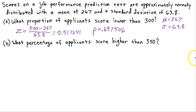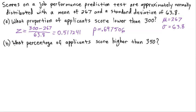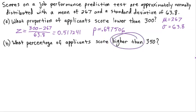Part B asks: what percentage of applicants score higher than 350? Since it's asking for a percentage, after we get our proportion we'll multiply by 100. First we need a Z-score for 350. Z equals 350 minus 267 divided by 63.8. We go back to the NumWorks calculator and use parentheses: (350 minus 267) then divided by 63.8, so the whole numerator is captured correctly.